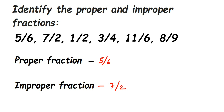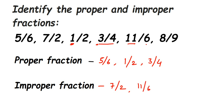The next one is 1 by 2 — 1 is smaller than 2, so it's a proper fraction. Then 3 by 4 — 3 is smaller than 4, so it is a proper fraction. Then 11 by 6 — 11 is greater than 6, so it is an improper fraction. Finally, 8 by 9 — 8 is smaller than 9, so it is a proper fraction.